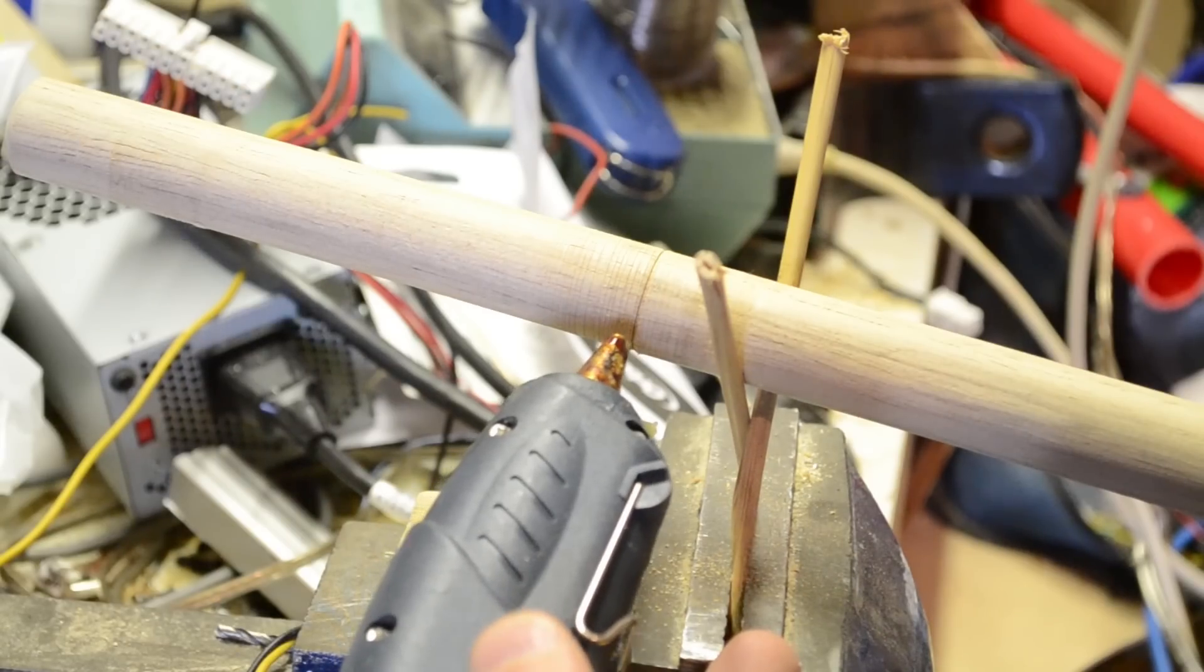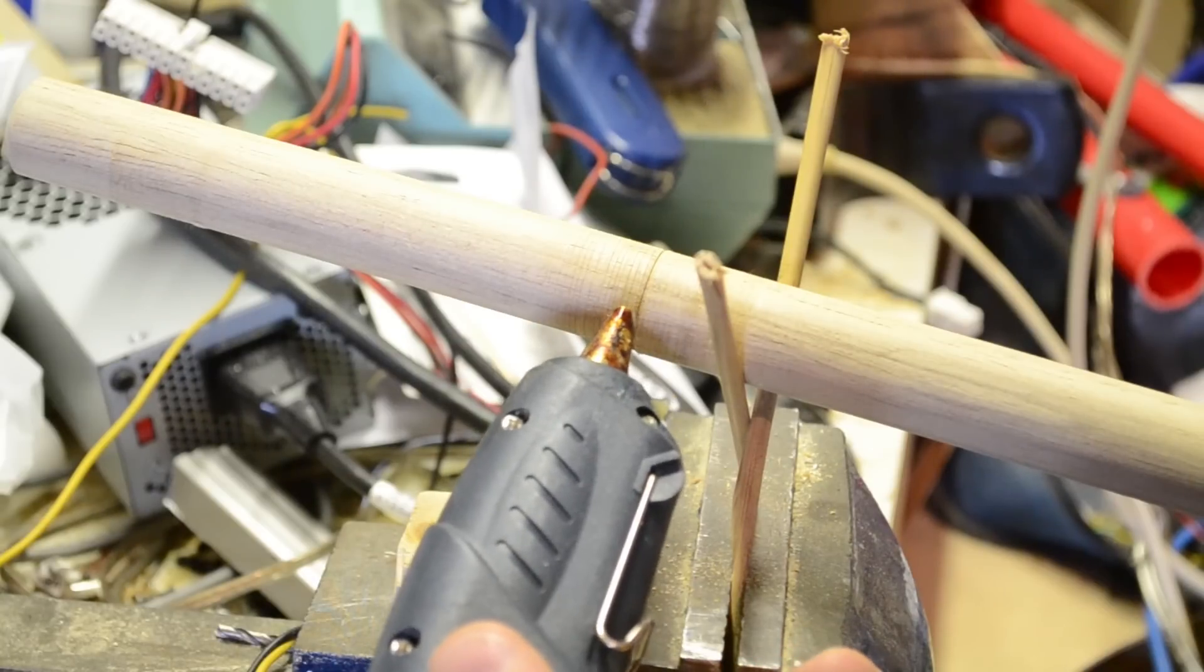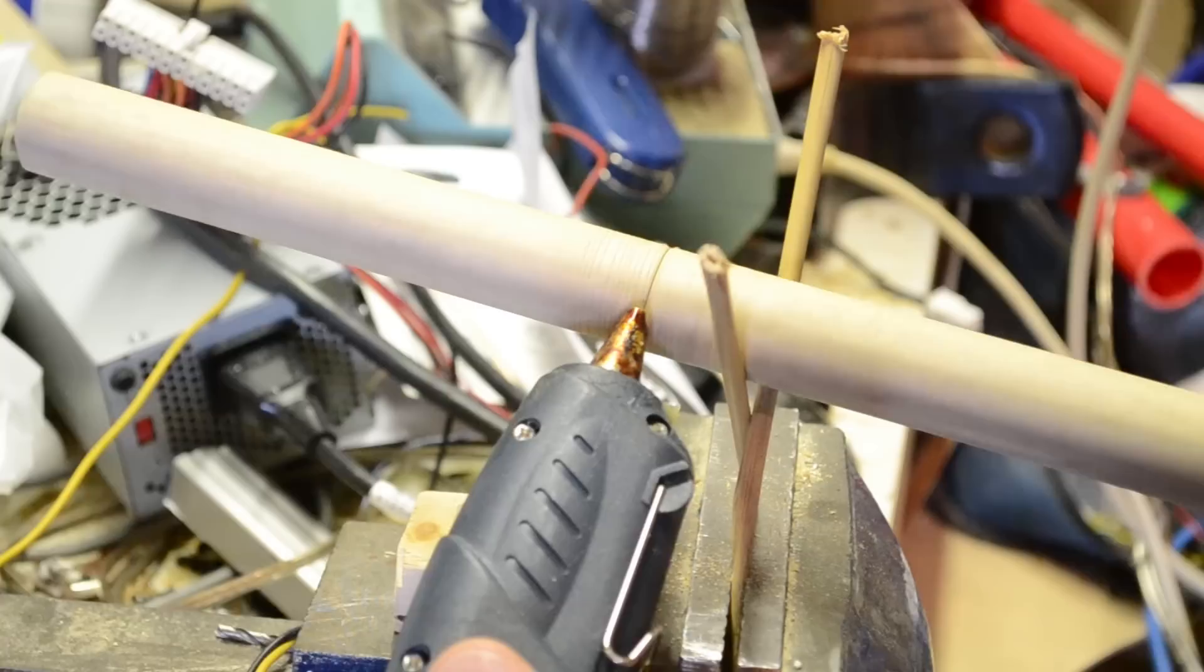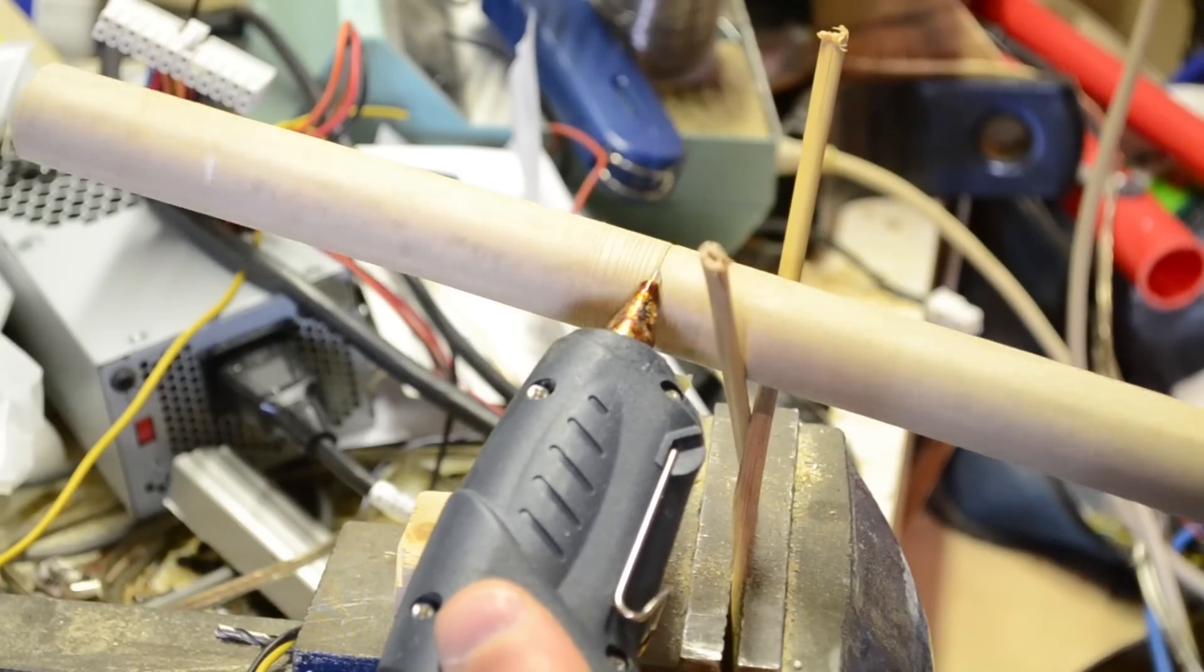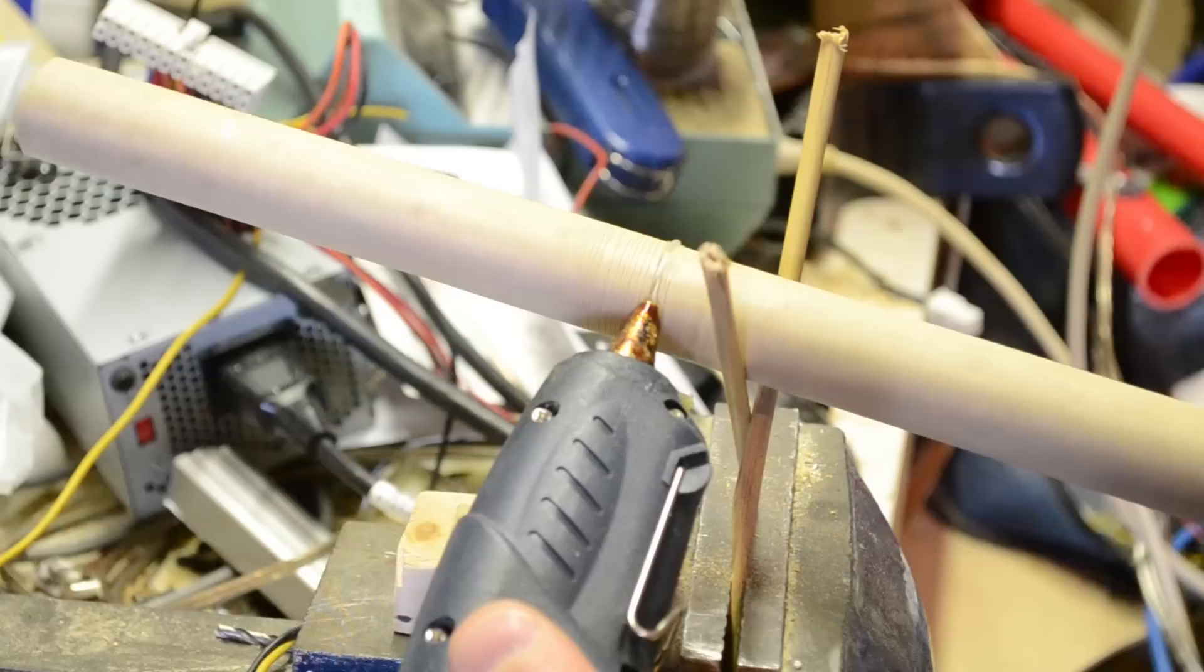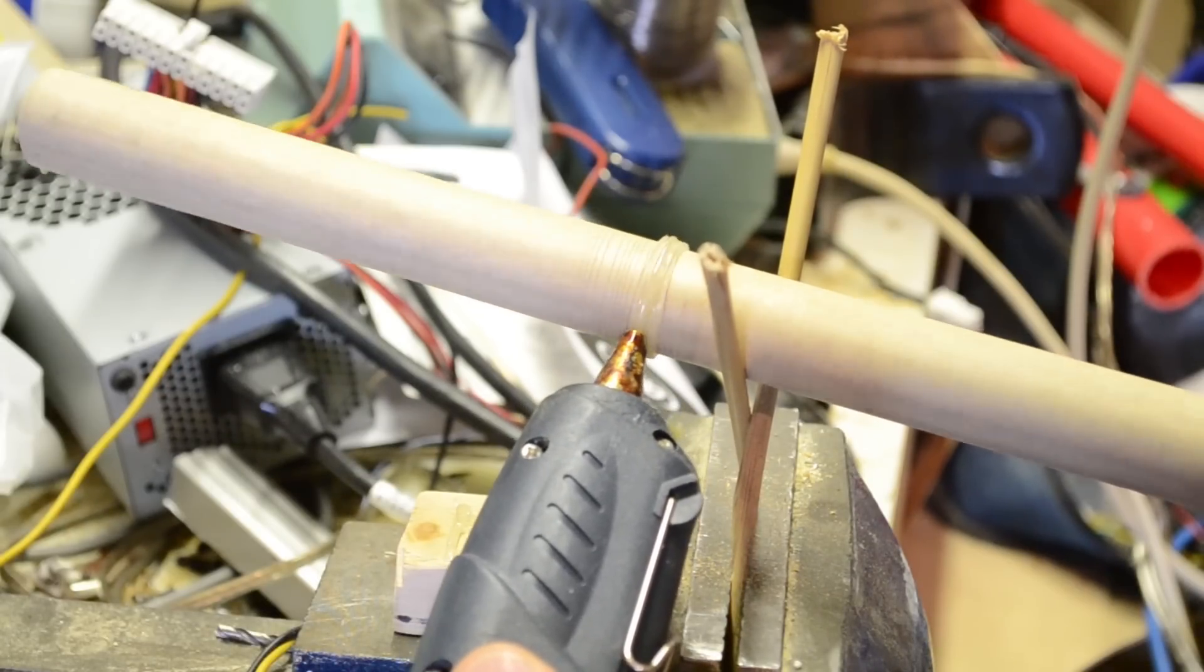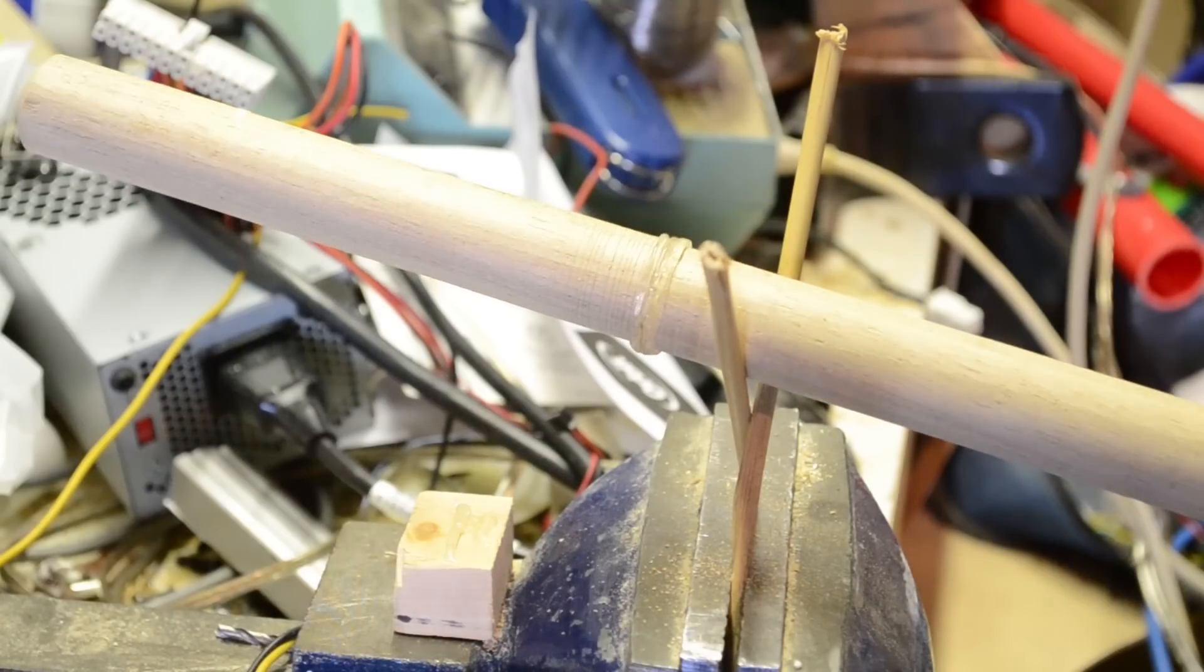Now the last part here is we want to run a bead of hot glue around the groove that we've just made. So we'll rotate the wood slower this time if we can. I just gotta let it build up a little. And that's really all you need to do.